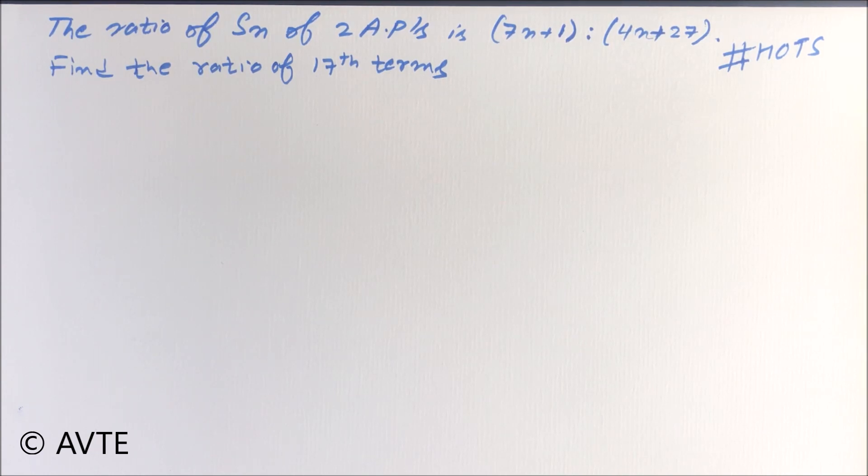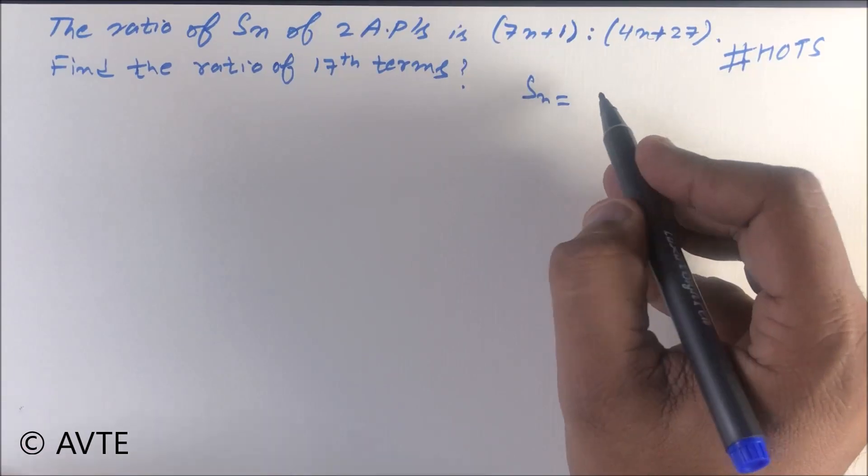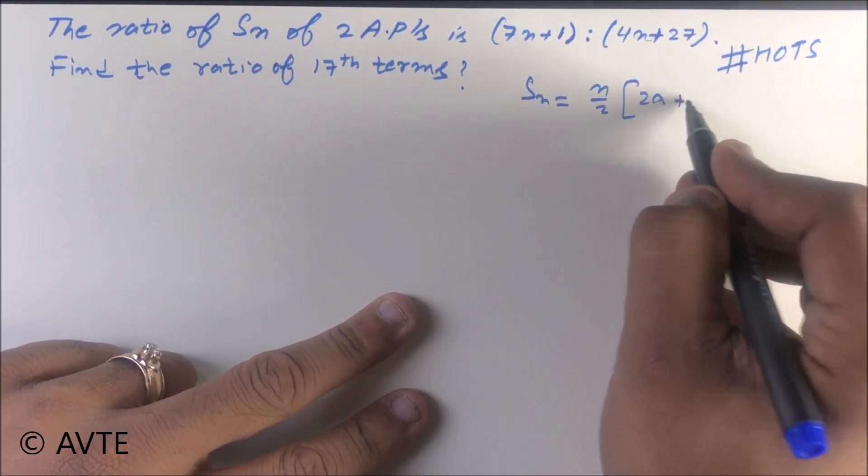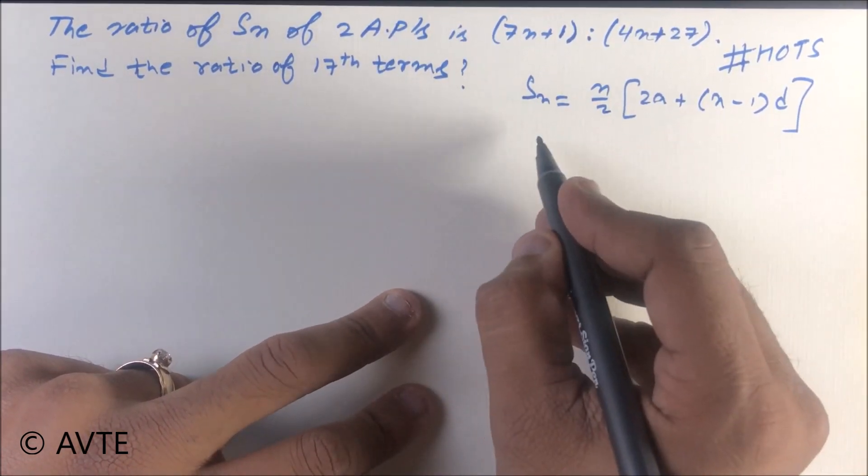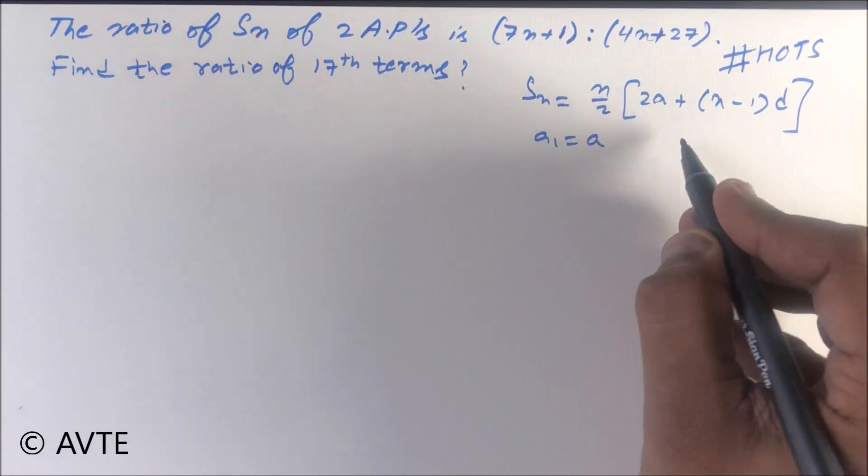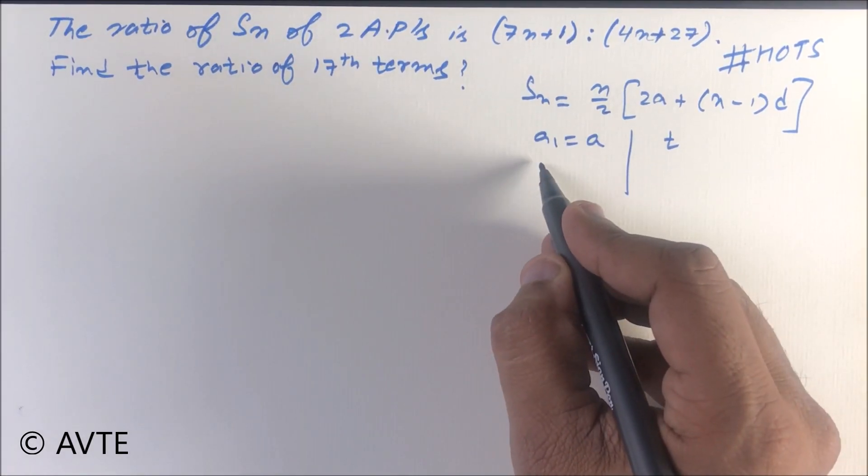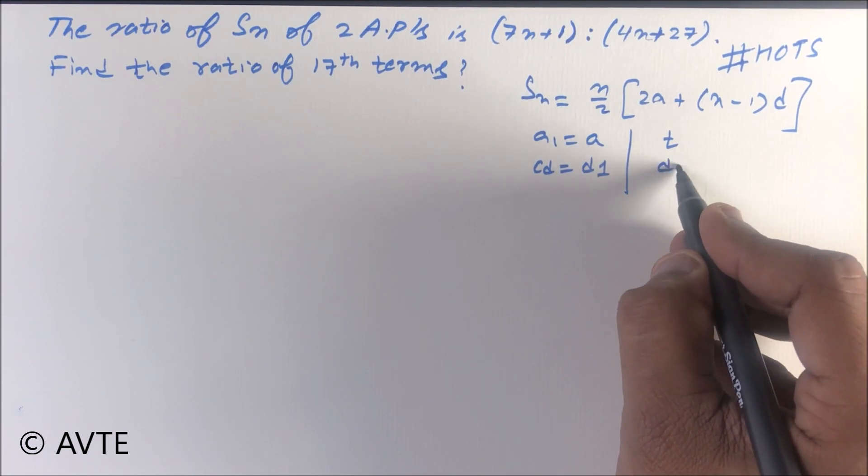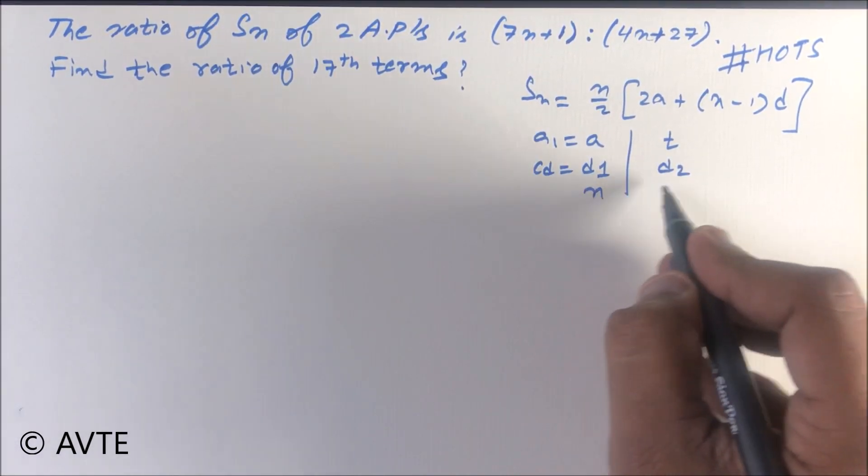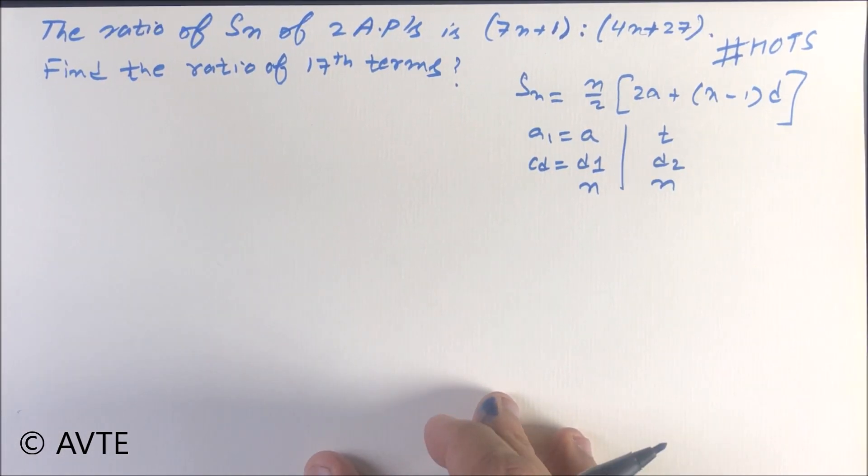So guys, there are two APs. First, the Sn formula: n by 2 times 2a plus n minus 1 times d. So there are two APs, so the first term of the first AP is a and the first term of the second AP is t. The common difference of the first AP is d1 and the common difference of the second AP is d2, and they have number of n terms.